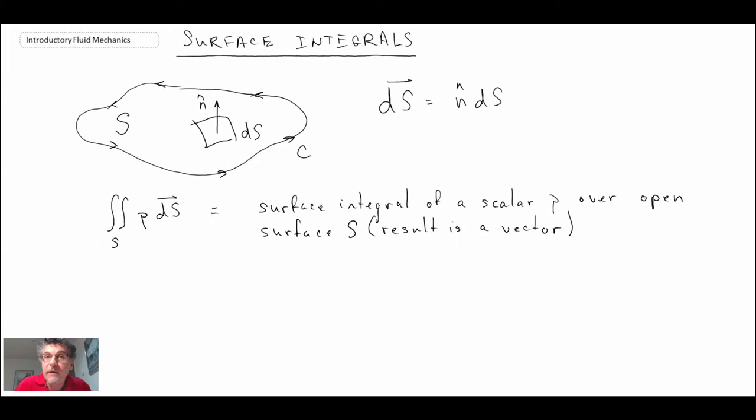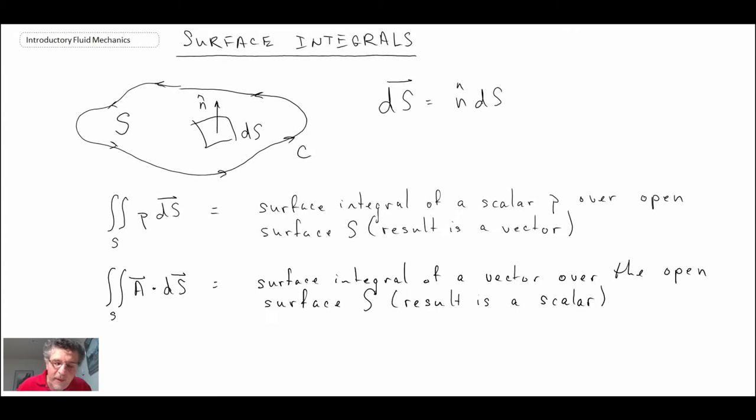Now if what we're integrating is not a scalar, but it's a vector, there are two different ways we can do this. One with the dot product and the other with the cross, so let's take a look at both of those. So if our mathematical operation that we're looking at involves the dot product of a vector integrated over a surface, it will result in a scalar, because recall the dot product always results in a scalar.